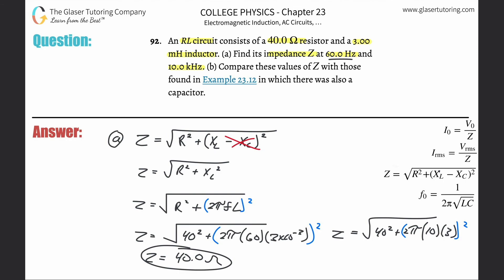And then in the second case, what do you think is going to happen? Well, let's calculate: root of 40 squared plus parenthesis 2π times 10 times 3, and that whole thing is squared. We now get a value of 193.